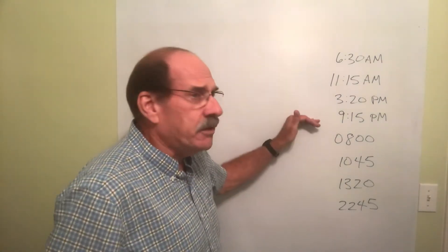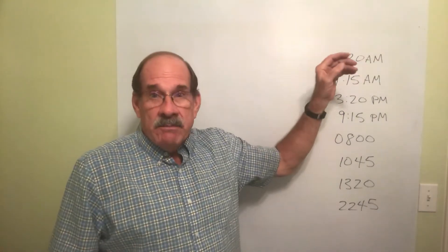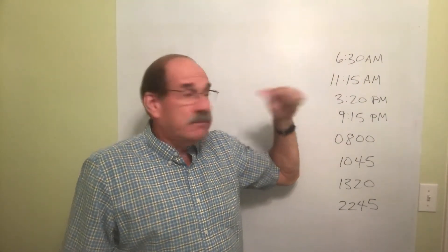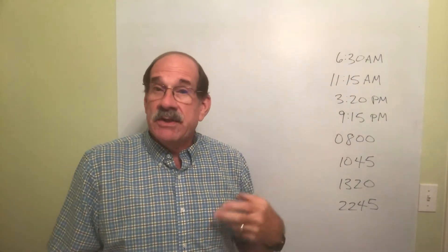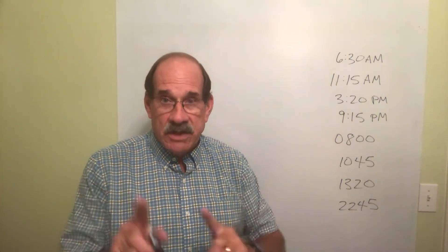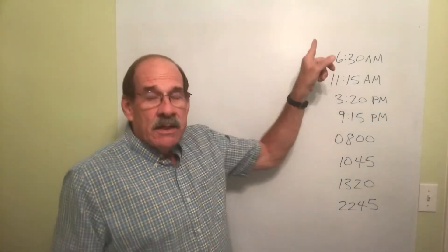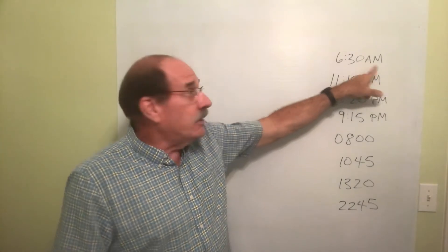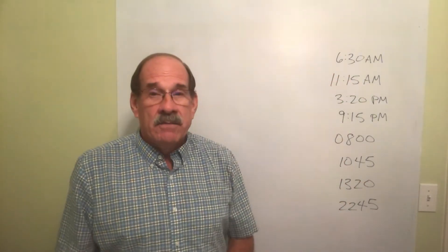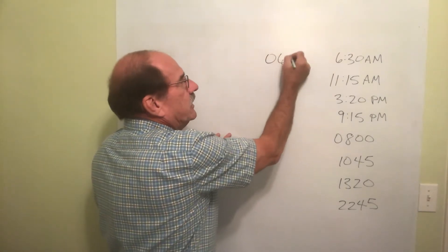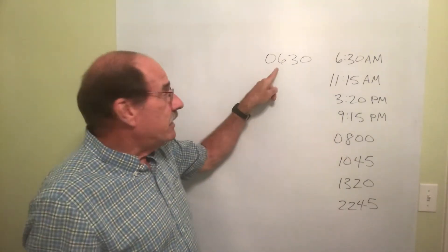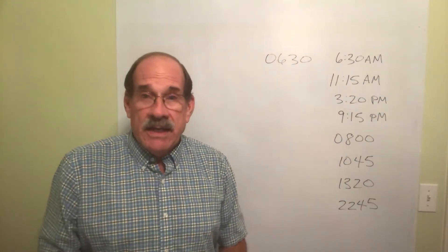First, let's look at the 12-hour time. Take 6:30 a.m. — that means it's been 6 hours and 30 minutes since the day began. Now let's convert that to military time. There are three basic rules in writing military time or 24-hour time — use either term, they mean the same thing. First, you don't put the a.m. or p.m., and you don't put the dots. But you have to have four digits. There are only three there, so you add a zero: 0630. That means it's been 6 hours and 30 minutes since the day began at the previous midnight.